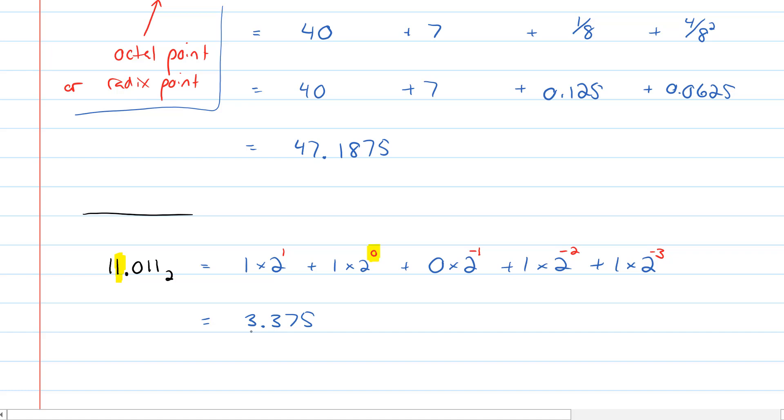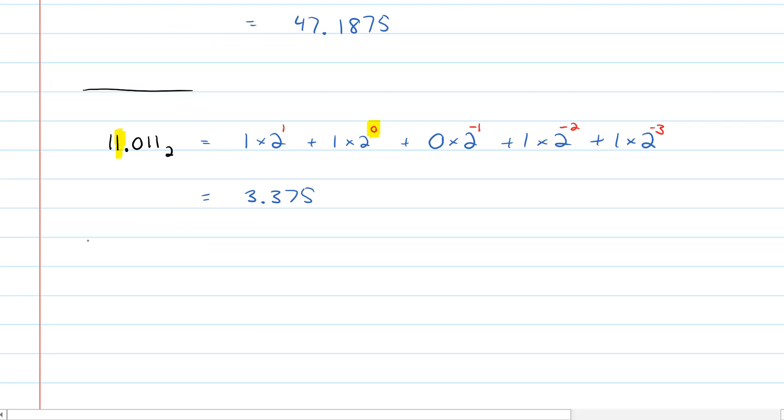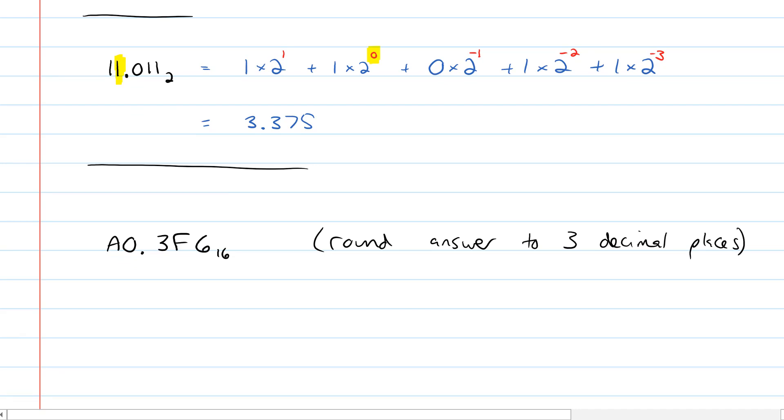Let's do one third example, which is the number A0.3F6 base 16. So this is a hexadecimal number, and we're going to round the answer to three decimal places. And it's okay to call them decimal places in this example because we're moving into the decimal system. Now, we're not currently in the decimal system. We're in the hexadecimal system.